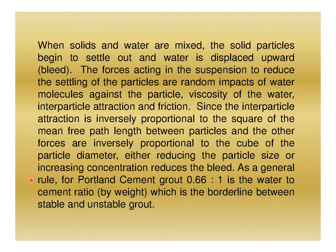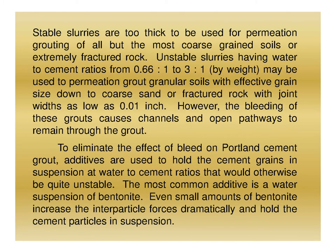As a general rule, Portland cement grout with a water-to-cement ratio of 0.66:1 by weight is the borderline between stable and unstable grout. Stable slurries are too thick for permeation grouting of all but the most coarse-grained soils or extremely fractured rock. Unstable slurries with water-to-cement ratios from 0.66:1 to 3:1 by weight may be used to permeation grout granular soils down to coarse sand, or fractured rock with joint widths as low as 0.01 inch.